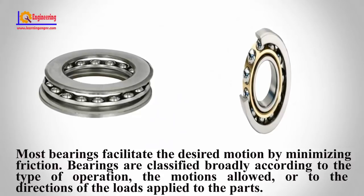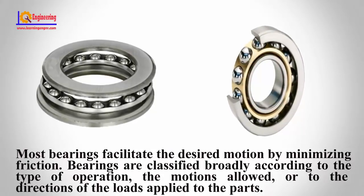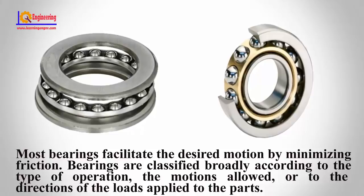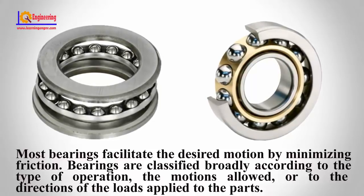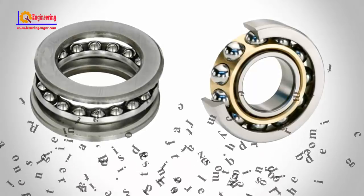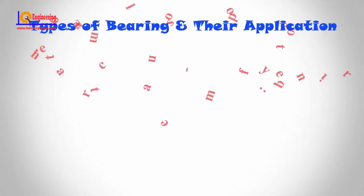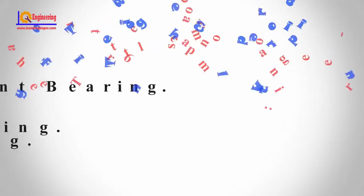Most bearings facilitate the desired motion by minimizing friction. Bearings are classified broadly according to the type of operation, the motions allowed, or the directions of the load applied to the parts. In this video, I will show you different types of bearings and their applications. There are at least 6 common types of bearing, each of which operates on different principles.